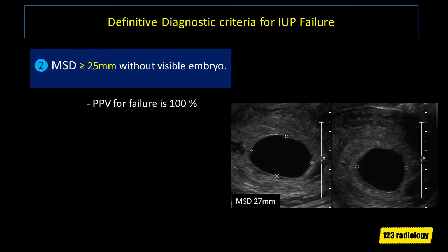This gives us the second definitive criteria for pregnancy failure: a mean sac diameter of 25 mm or greater with no visible embryo, with a 100% positive predictive value. As you can see on this image, the mean sac diameter is about 27 mm with no visible embryo within the gestational sac, indicating definitive early pregnancy failure.